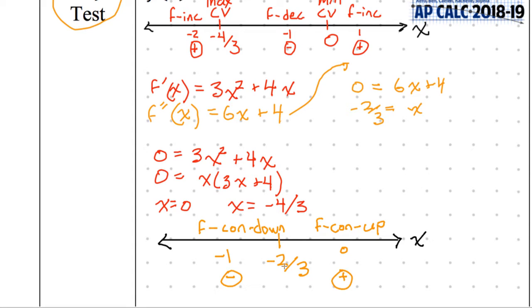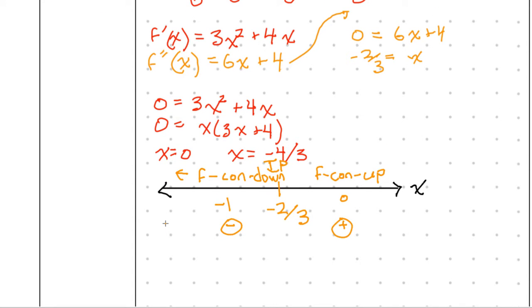That is an inflection point. We need to actually label those intervals to finish this up. What was the first thing that we found? Fcv. And what was Fcv? Negative 4 over 3 and 0. X equal to negative 4 over 3 and 0.